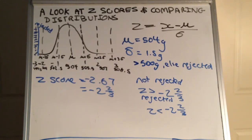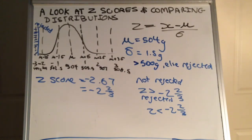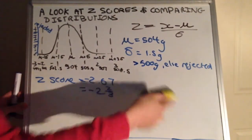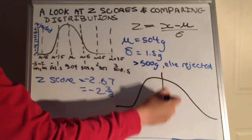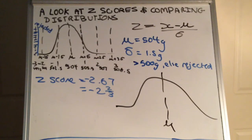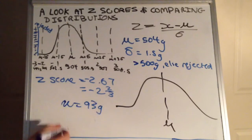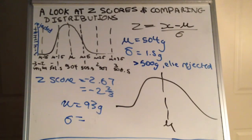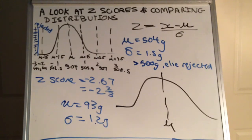The next question says another manufacturer makes tins of fresh tuna. So we've got cans of soup from one manufacturer and cans of tuna from another. They did some testing and found that the mean weight of one of their tuna cans was 93 grams and the standard deviation was 1.2 grams. The question asks: if the tin of tuna must weigh more than 90 grams otherwise it will be rejected, calculate which tuna cans will be rejected in terms of a z-score.